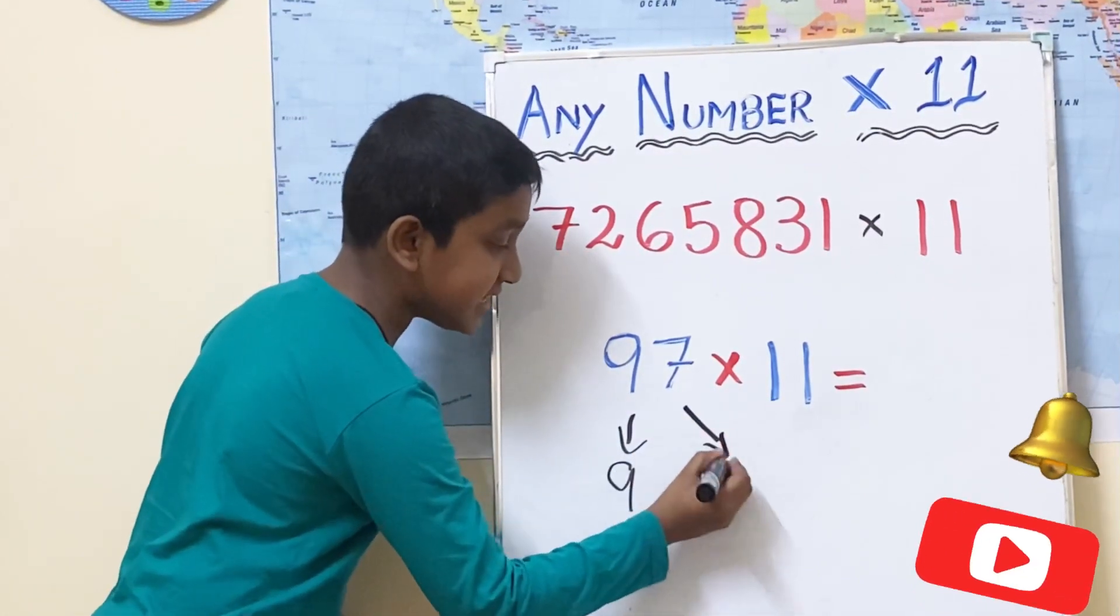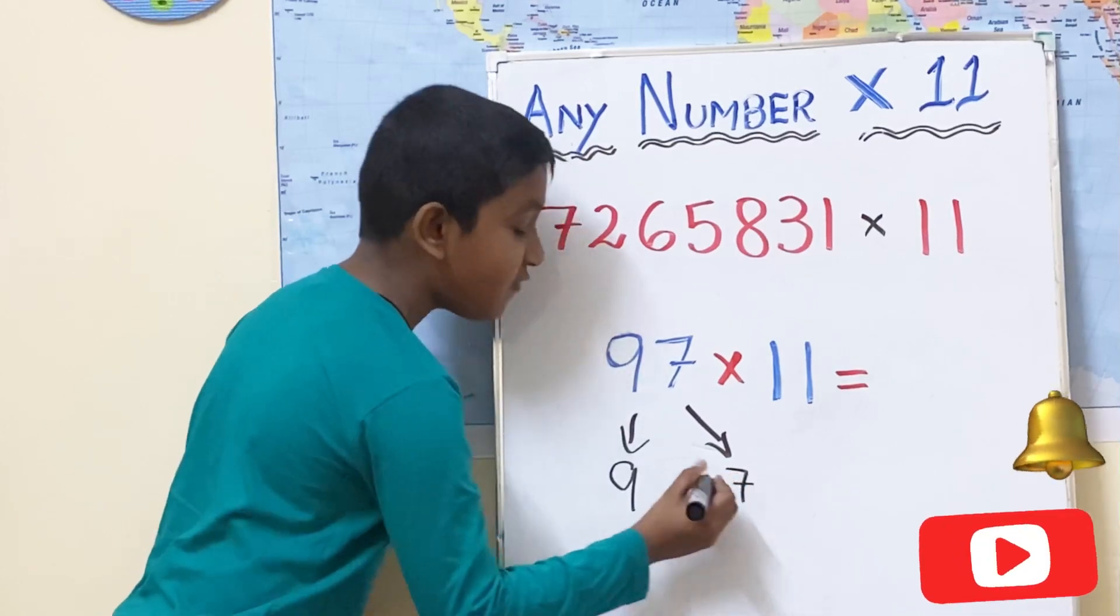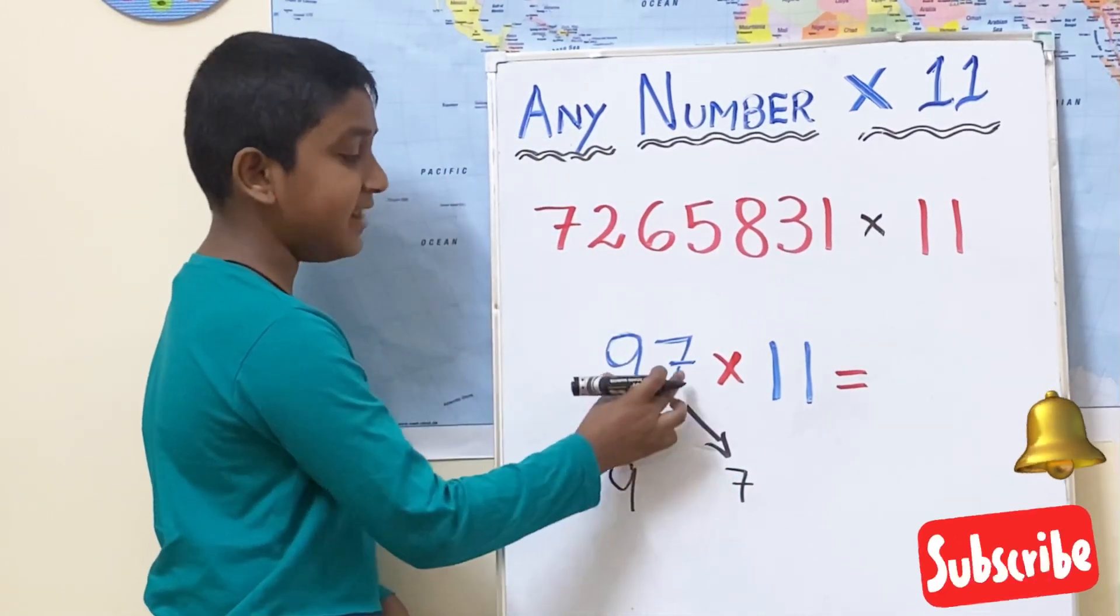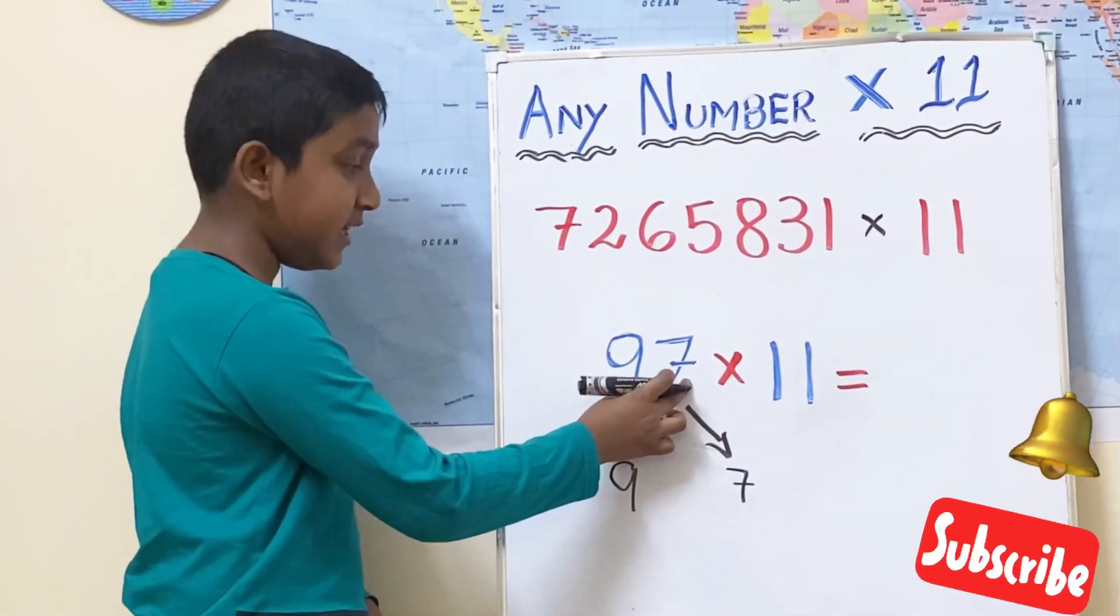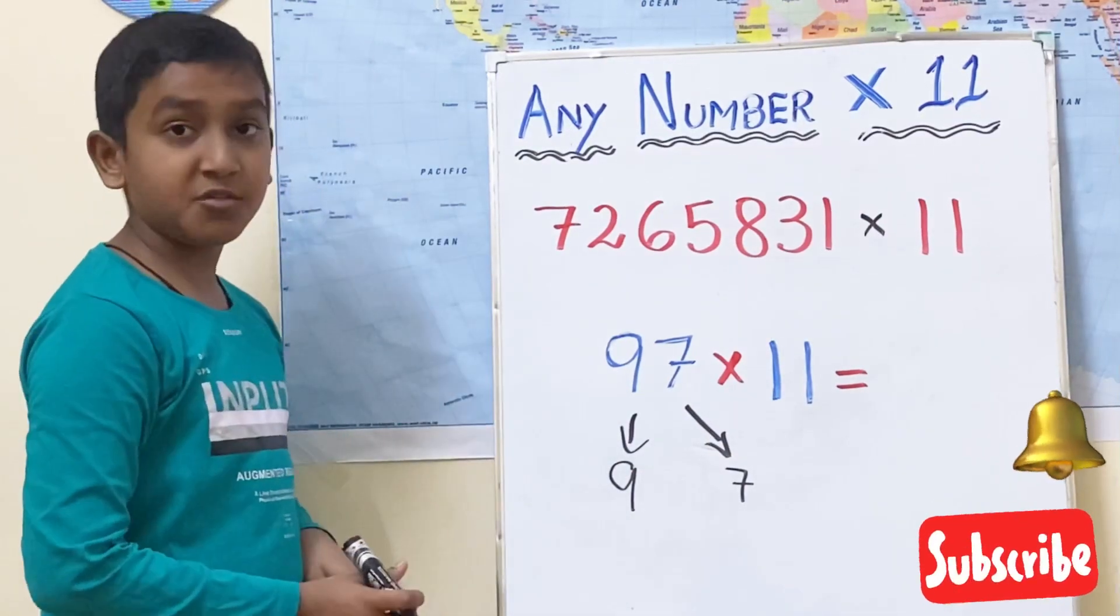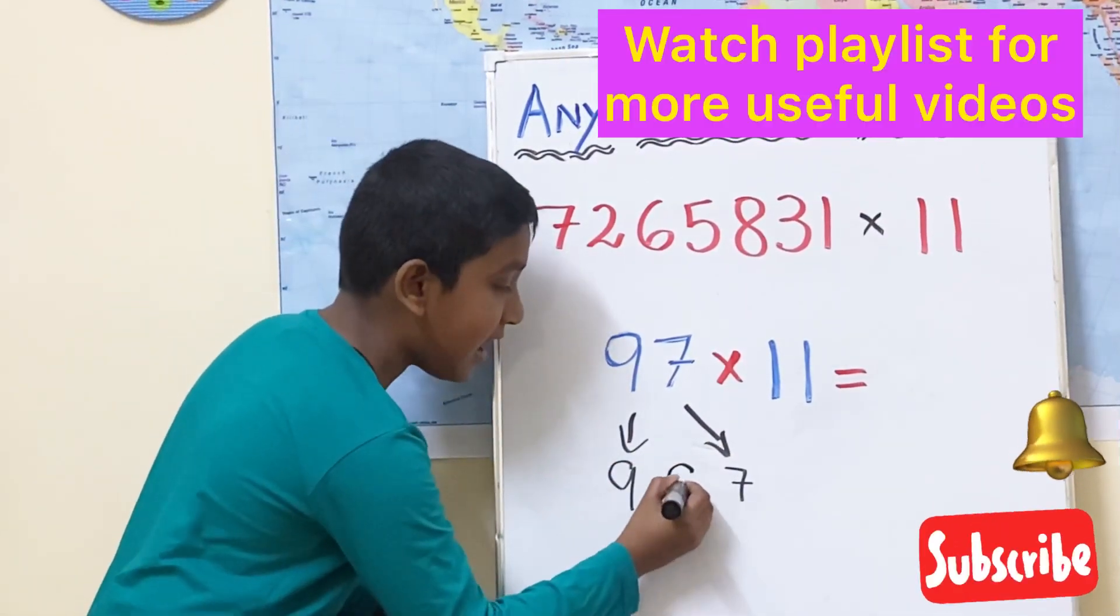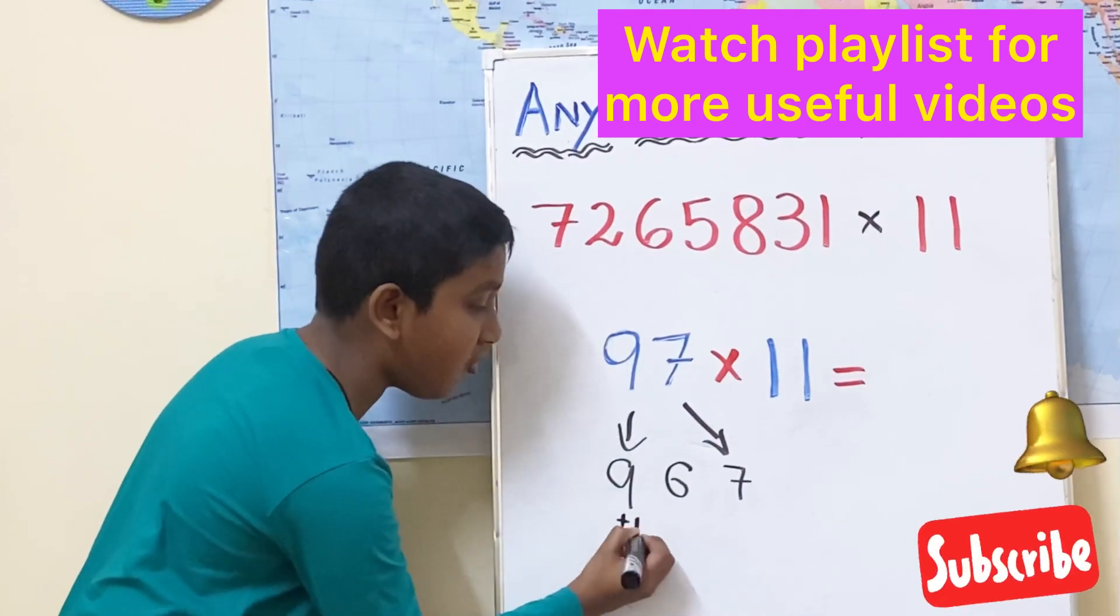Question's last digit is the answer's last digit. For the middle number, we have to add the question's numbers together. 9 plus 7 is equal to 16. Write the 6 in middle and add 1 with the before number.